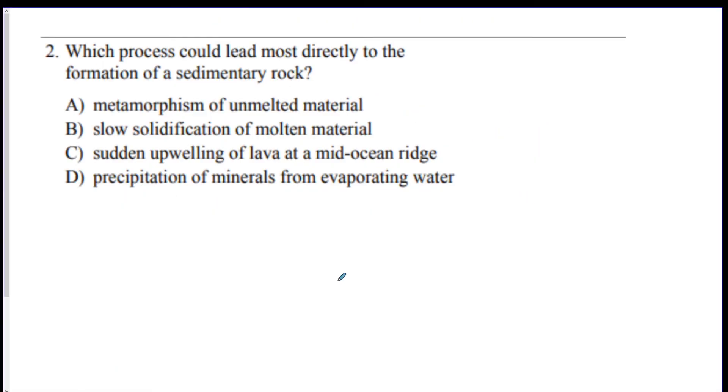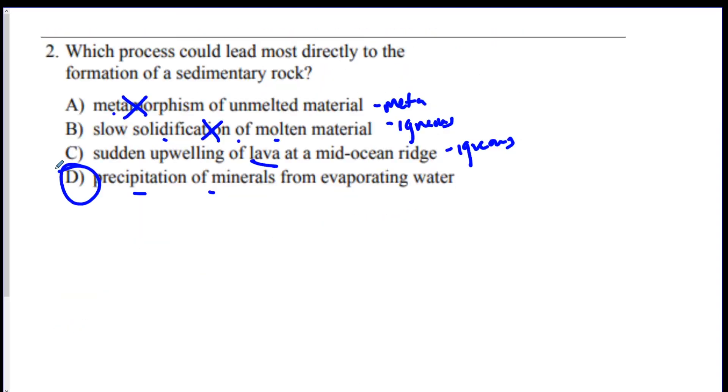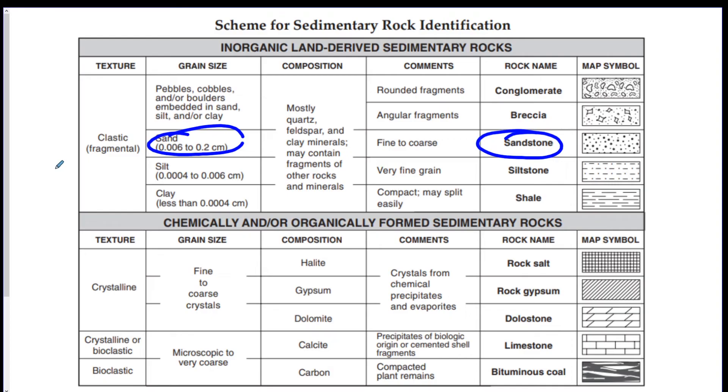Number two, which process could lead most directly to the formation of sedimentary rocks? Well, we could do process of elimination. Metamorphic makes metamorphic rock. Solidification of molten material, that makes igneous. Lava, igneous. Which means it's precipitation of minerals from evaporating water. D. And I just want to show you where that is. This is the sedimentary rock chart, and there it is. Precipitates.